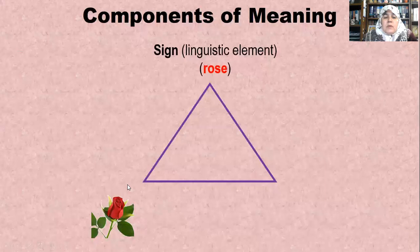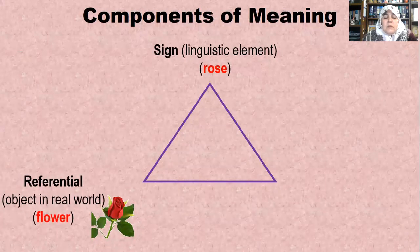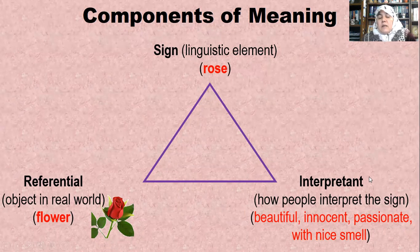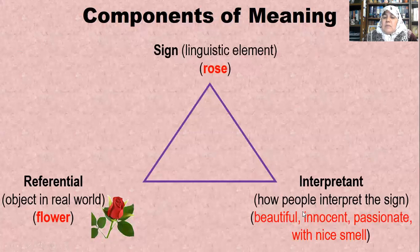The other component is the referential, which is the object in the real world — the flower itself, not the letters, the material element. The last component is the interpreter: what does it bring to your mind? When I say 'rose,' people interpret the sign as beautiful, innocent, passionate, with a nice smell — these elements come to your mind.